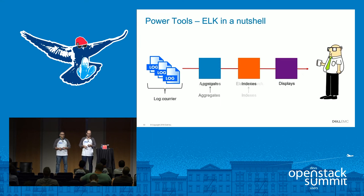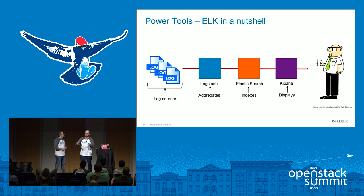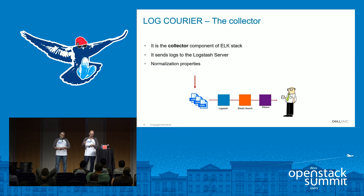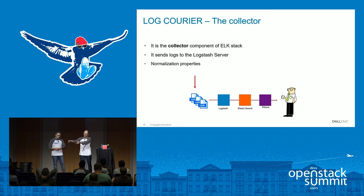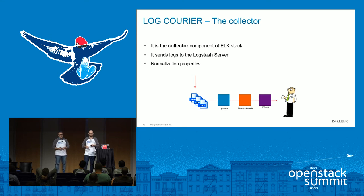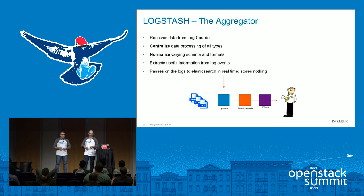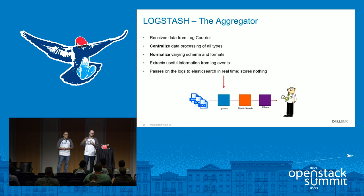Drawing the analogy of functions: you move the logs with something like Log Courier to ship those logs; Logstash aggregates them; Elasticsearch does the indexing; and Kibana provides the display. Log Courier is the collector in our case — you have the logs and move them to the Logstash server. In our implementation we also do some normalization. The aggregation layer in Logstash centralizes all the data from collectors, does another set of normalization across various schemas and formats, and extracts log events.